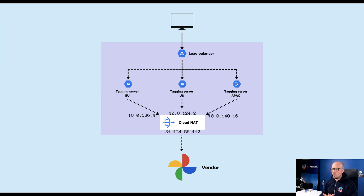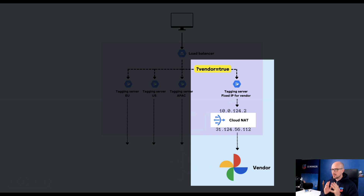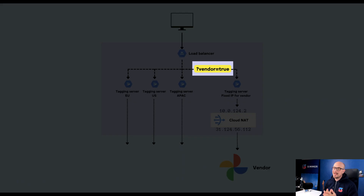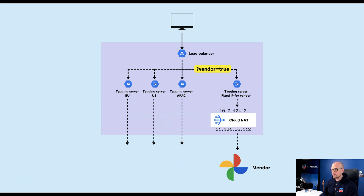Besides, you don't need all your outgoing requests to have a static IP address — just those targeted at the specific vendor. So what we're going to do is build a new tagging server specifically designed for requests to vendors who need to allow-list those IP addresses. We'll configure the load balancer to redirect all traffic with a specific URL identifier to that tagging server, which will have the static IP. This minimizes the traffic that needs the static IP and keeps all other requests flowing through your regular service cluster.